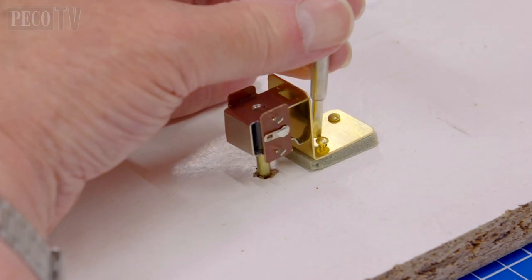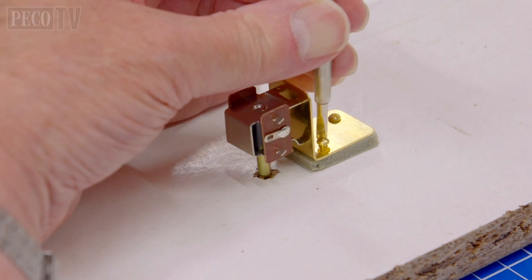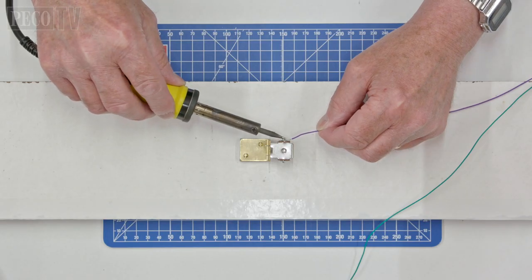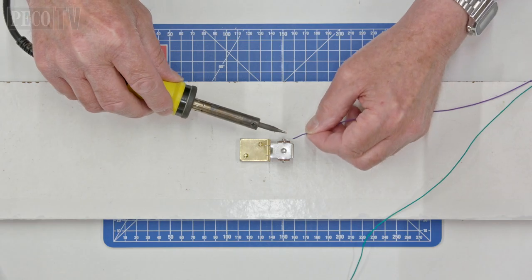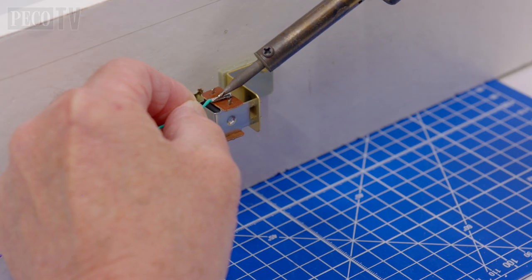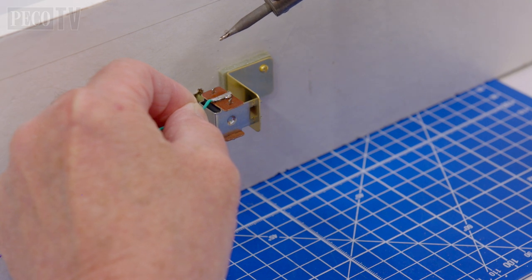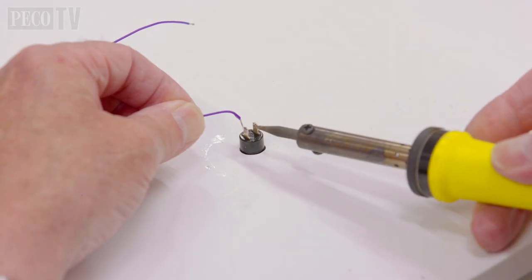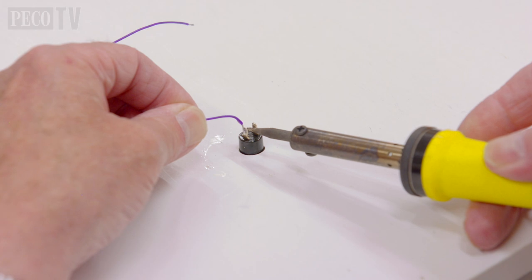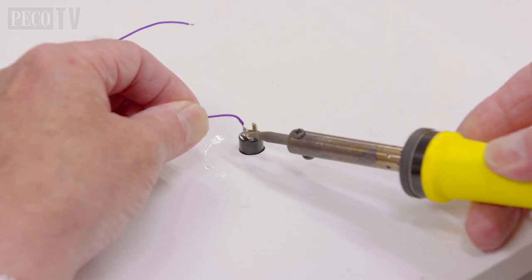Fix the bracket using the screws provided to your baseboard. Now we begin the wiring process. Solder the two wires onto the two connections either side of your solenoid, then connect via a momentary or non-latching switch to a 16V AC power supply.